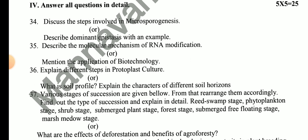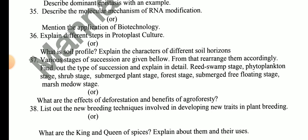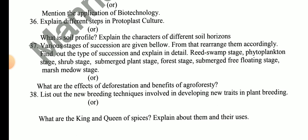Explain the different steps in protoplast culture. What is soil profile? Explain the characters of different soil horizons. Various successional stages are given below — rearrange them in order and find out the type of succession and explain in detail: Reed swamp stage, Phytoplankton stage, Shrub stage, Submerged plant stage, Porous stage, Submerged free-floating stage, Marsh stage. What are the effects of deforestation? Benefits of agroforestry. List out the new breeding techniques involved in developing new traits in plant breeding. What are the king and queen of spices — explain their uses?